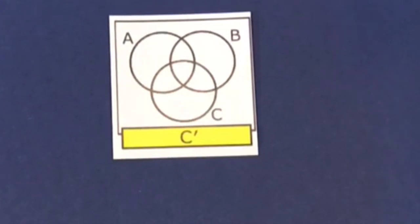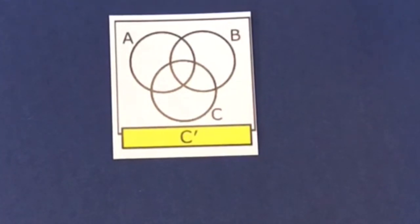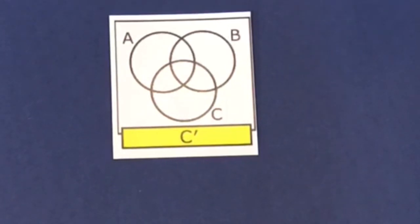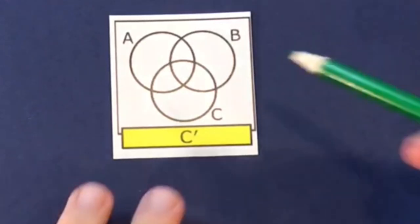This example is the complement of C — everything that's not in set C. Again, you ignore sets A and B and just think of everything that's not inside the C circle.